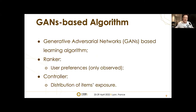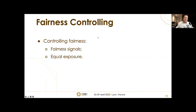With this learning strategy in mind and the big success of GAN in recommendations, we propose a novel GAN-based learning algorithm called FairGAN. It consists of two components: the Ranker, which models user preferences from observed interactions, and the Controller, which captures the distribution of item exposures according to the current ranking generated by the Ranker dynamically. The Controller then generates fairness signals that enforce the exposure of individual items to be equal, helping the Ranker search for optimal rankings that fairly allocate exposure while maintaining user utility.